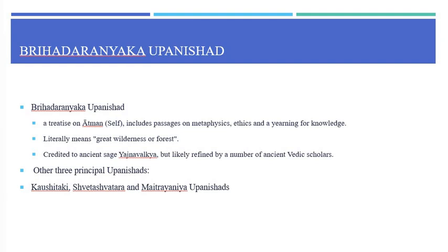The Shvetashvatara Upanishad opens with metaphysical questions about the primal cause of all existence, its origin, end, and what role — if any — time, nature, necessity, chance, and spirit had as the primal cause. The name Shvetashvatara has the compound Sanskrit root Shvetashva — Shveta plus Ashwa — which literally means 'white horse' or 'drawn by white steeds.' Shvetashvatara is a Bahuvrihi compound of Shvetashva plus Tara, where Tara means 'crossing' or 'carrying beyond,' so the word translates to 'the one carrying beyond on a white horse' or simply 'white mule that carries.'